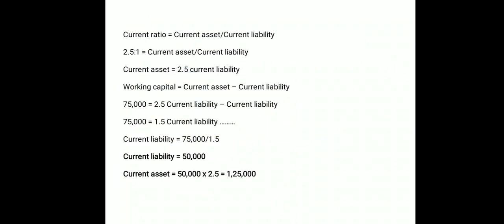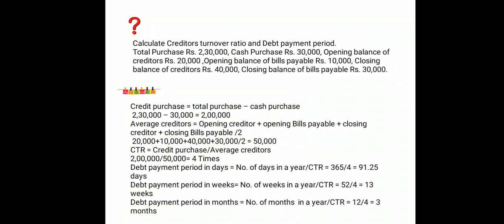Solving: current liability = 75,000 divided by 1.5 = 50,000. Then current asset = 2.5 × 50,000 = 1,25,000. For verification: current ratio = 1,25,000 divided by 50,000 = 2.5:1, which matches the given ratio. Confirmed.